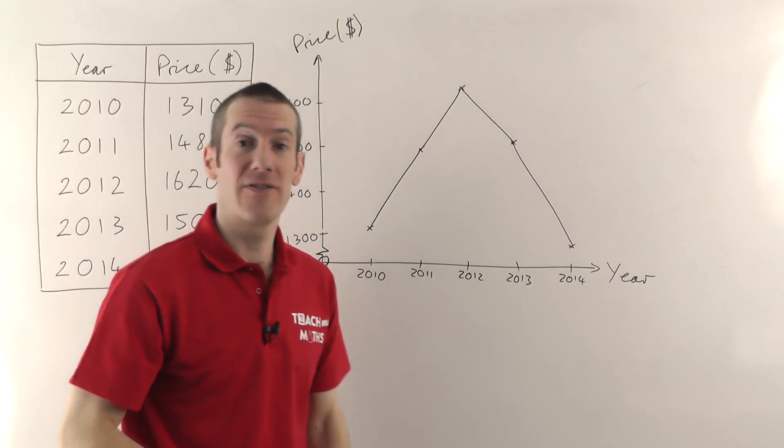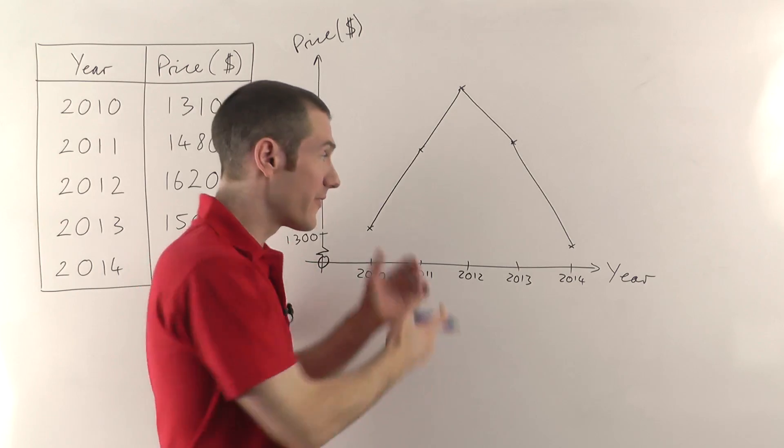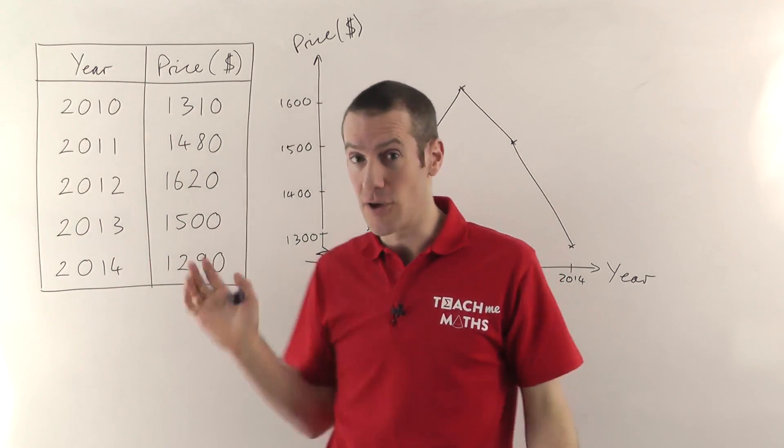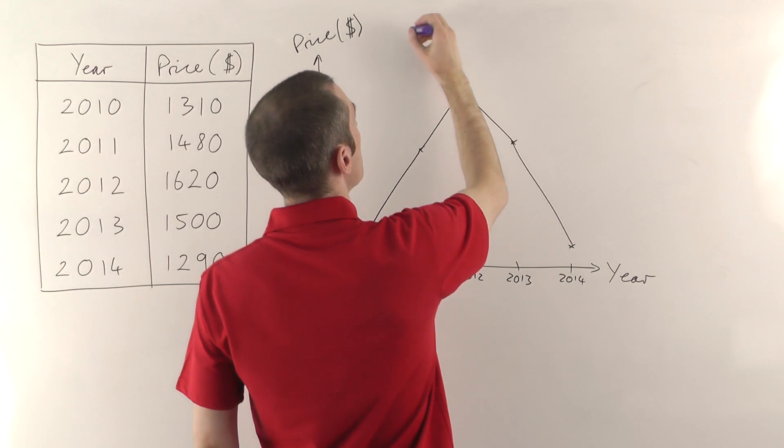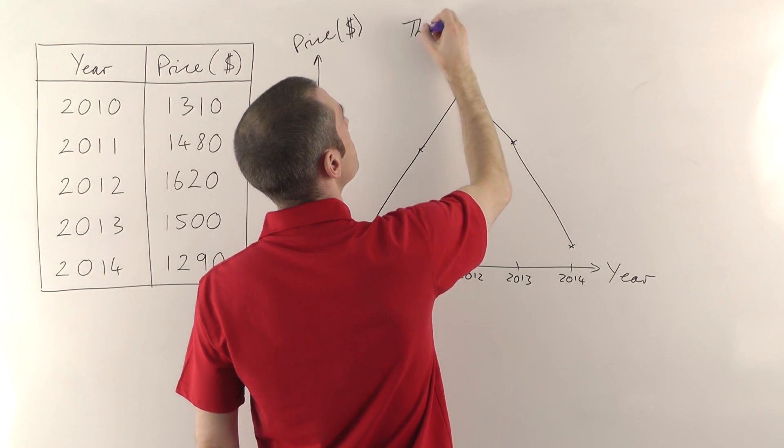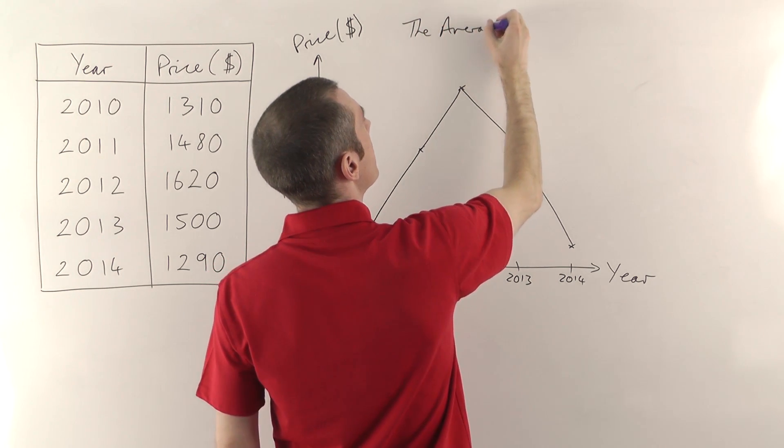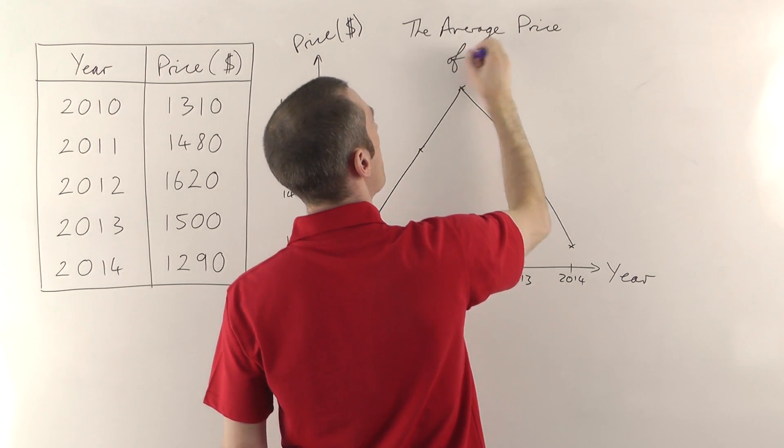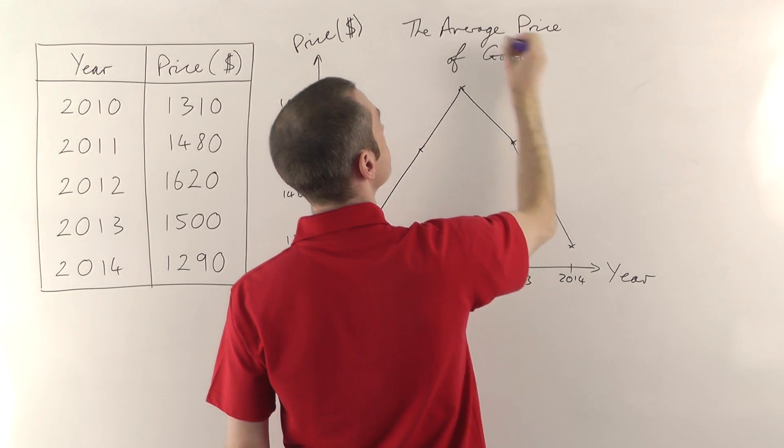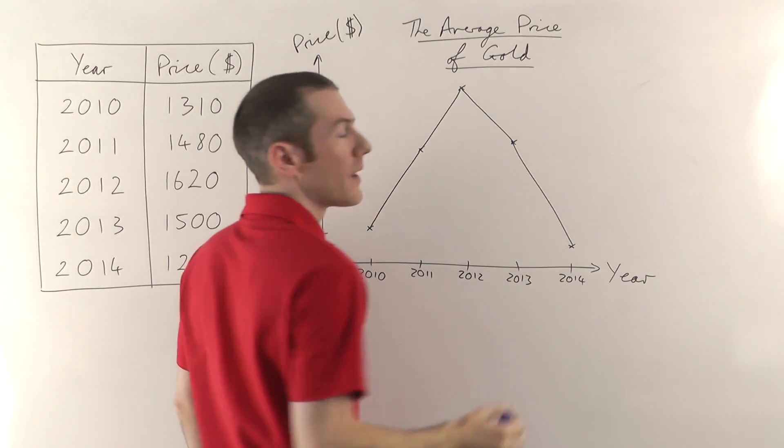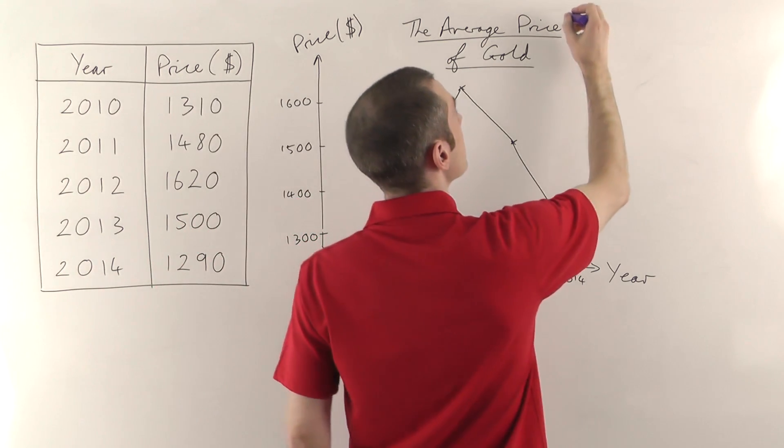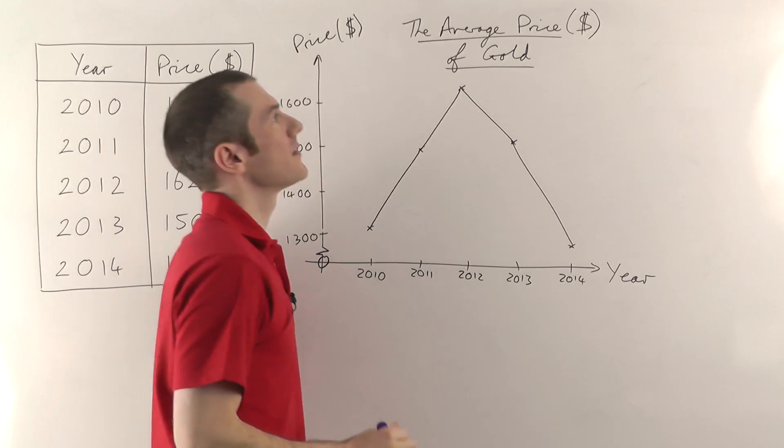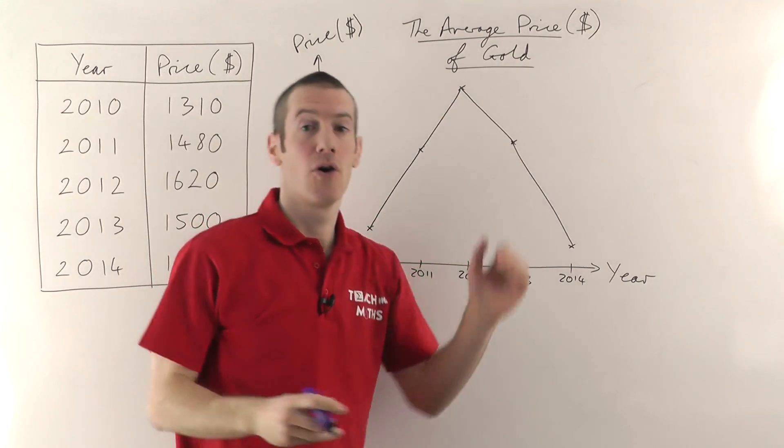The last thing then for a line graph is you must give it a title, and it's going to refer to what we're talking about here. So obviously in this case, we're doing the average gold price. So your title might be the average price of gold. And again, it's good practice to specify what the units are, even in your title. So it's the average price in dollars of gold.